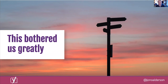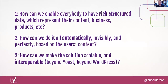Maybe with enough budget or development resources you could build something bespoke for your own site, but that pushes small independent publishers — the bakers, the butchers, the writers — out of the search results, which isn't a good thing. So, rewinding to November 2018, we set ourselves a challenge: how can we enable everybody to have rich structured data which represents their content, their business, their opening hours, their recipes, their products, their prices — automatically, invisibly, and perfectly, based just on the user's content? And how can we make that approach scalable and interoperable beyond Yoast and beyond WordPress, to be platform and technology agnostic?